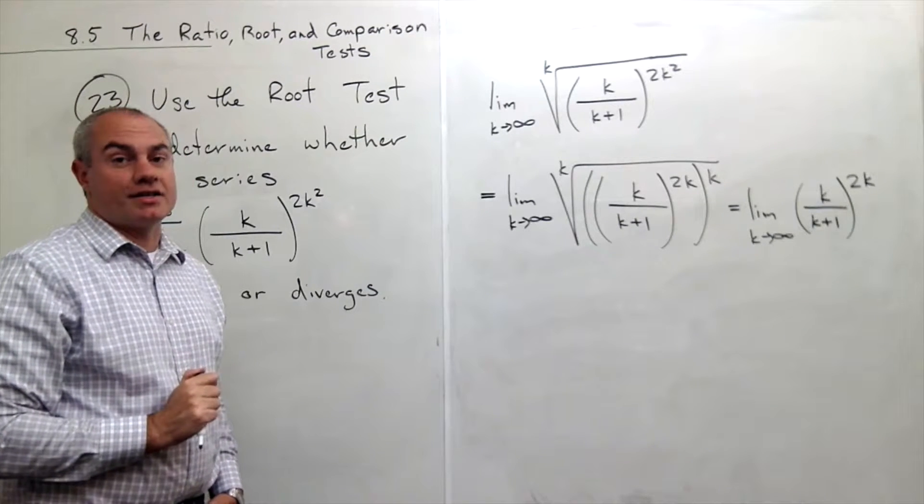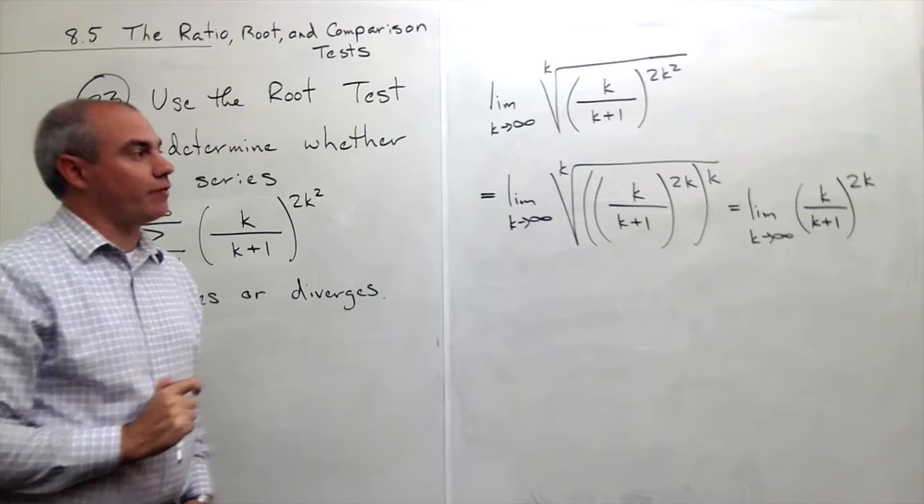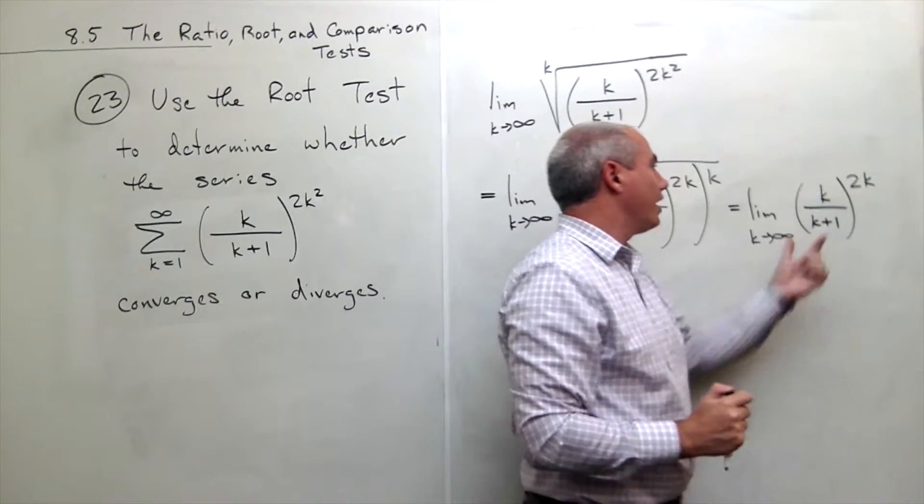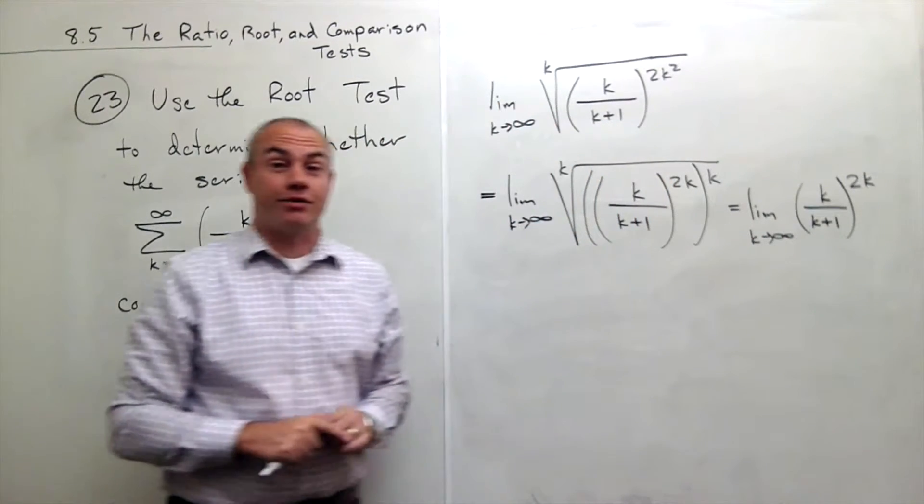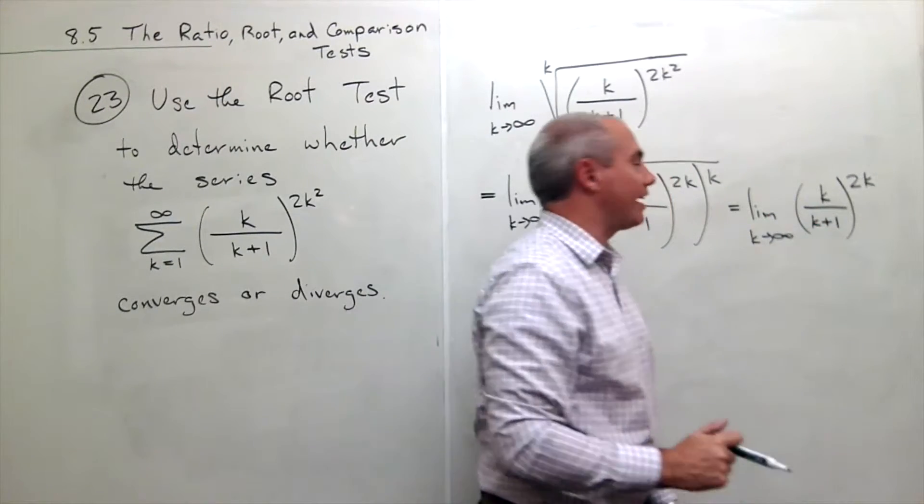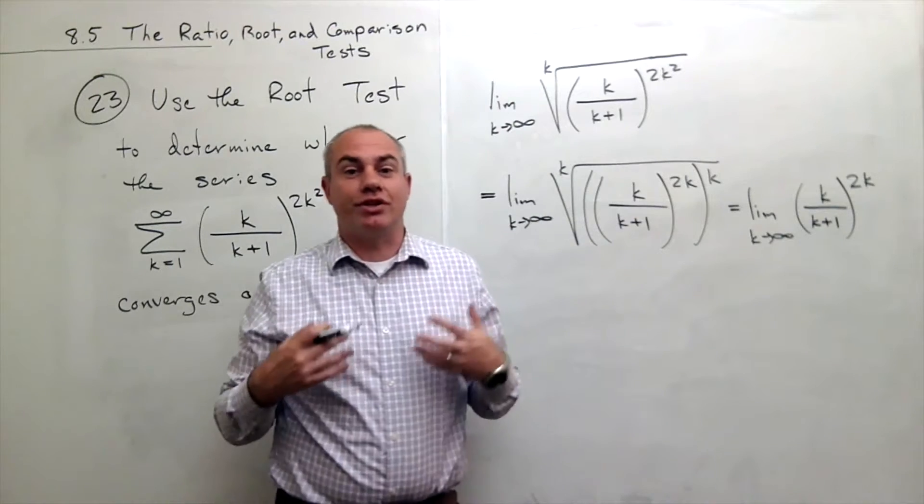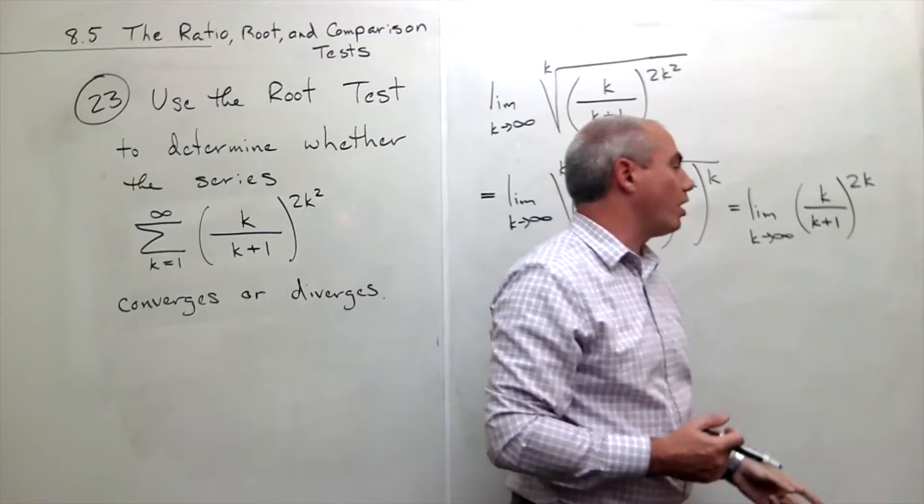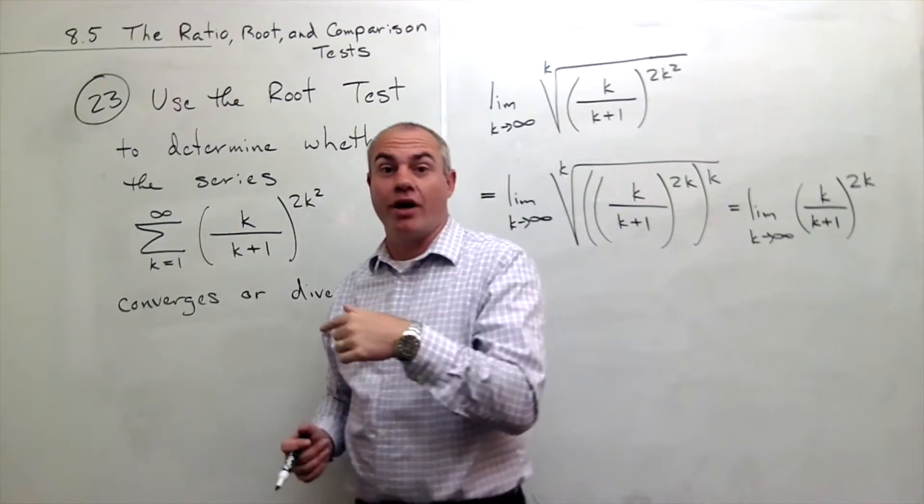So we are getting somewhere. The next thing that I want to do is I want to be a little bit clever on this one and show you a little trick you can do on something like this. When I see k over k plus 1, I say, man, it sure would be great if instead of having a k over a k plus 1, I had a k plus 1 over a k.